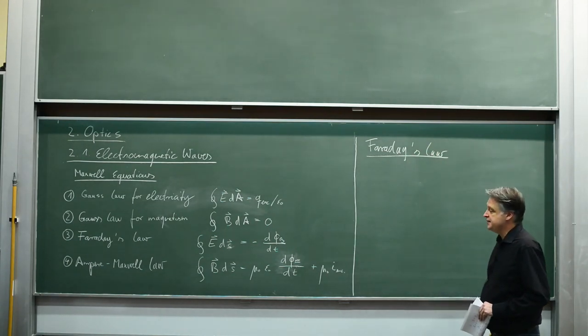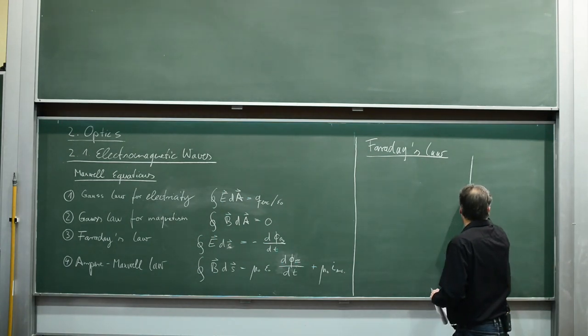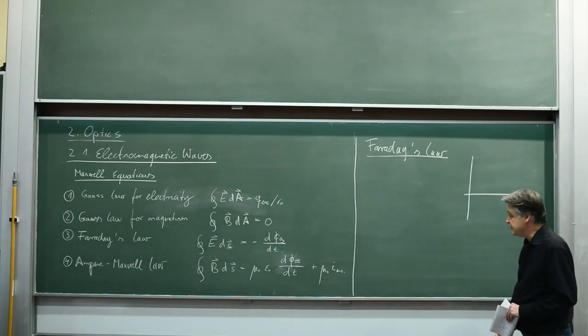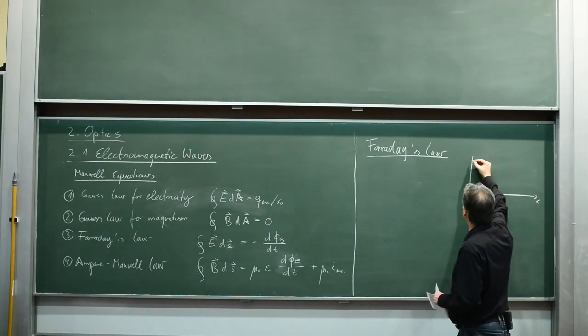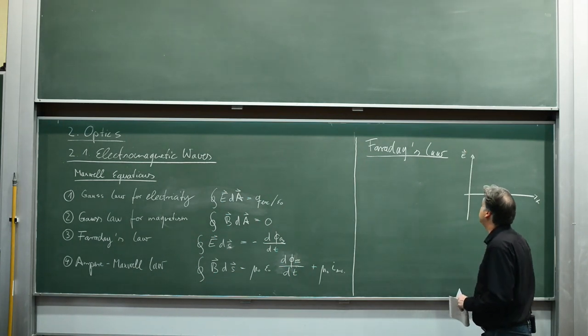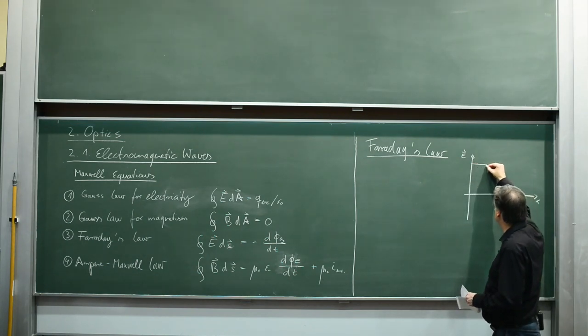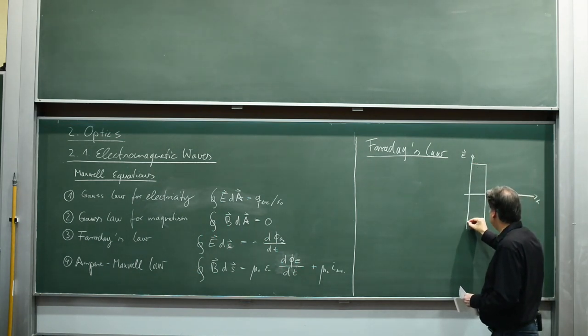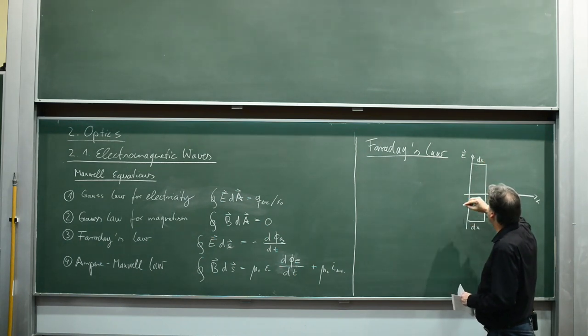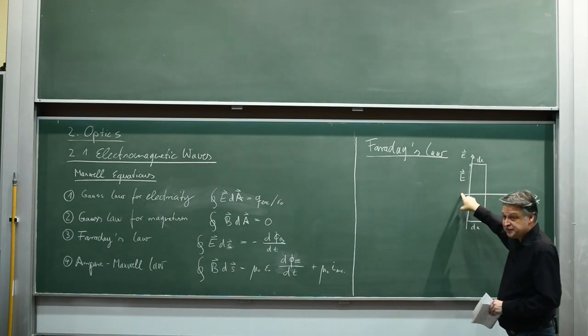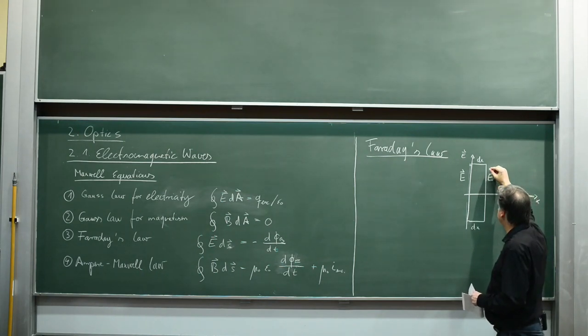We have a line integral around a closed surface. Let's consider an electric field that is moving in x direction. Here is the magnitude of our electric field. We can now determine a surface here. The length here is dx. The length here in electric field is E. The electric field has traveled and here this length is E plus dE.